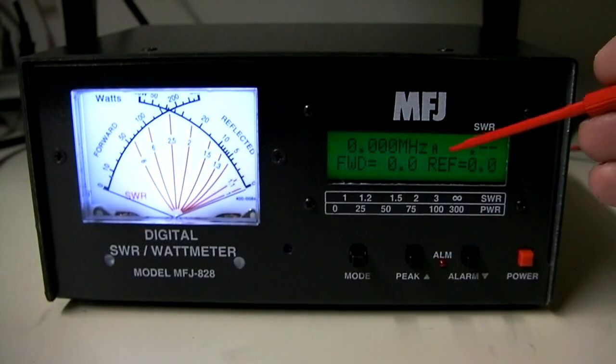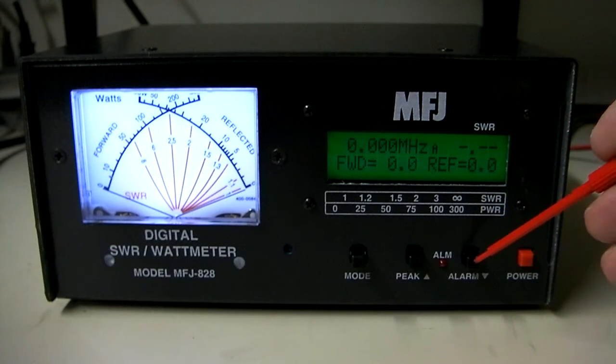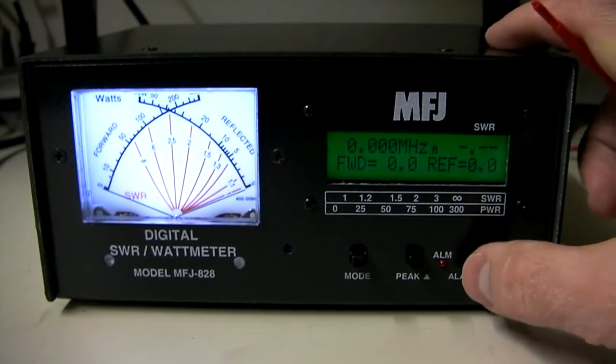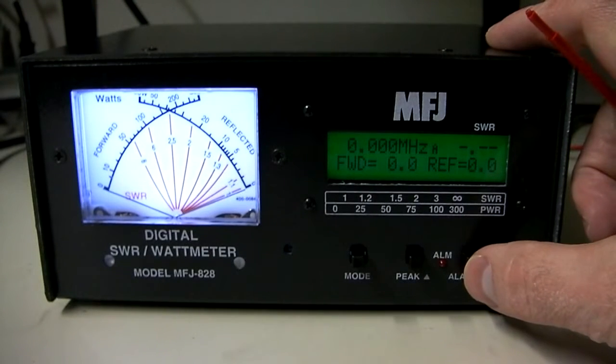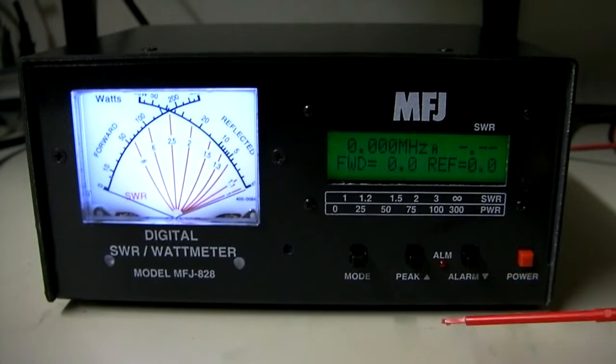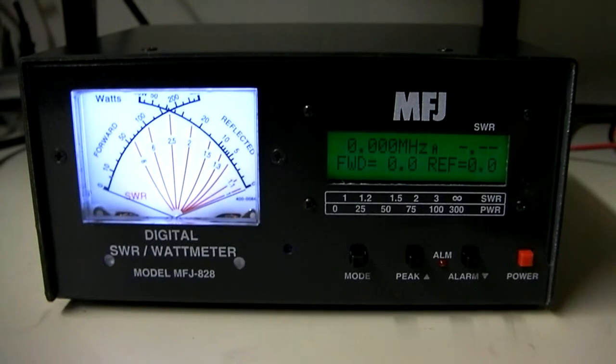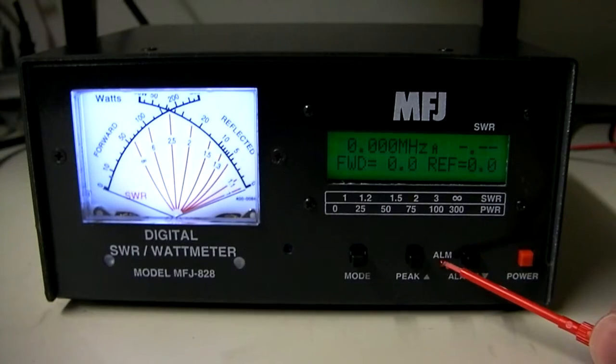Once again, your peak button here is going to change your average or one, two, three second peak hold times. This is your alarm option. That means the alarm's off with two beeps. The alarm on is one beep. Now, what's the alarm? The alarm is for your SWR. If your SWR goes over a certain value, so you can set it up to go, if it goes over 2.0, then it will sound the alarm, and the red light here will light up.